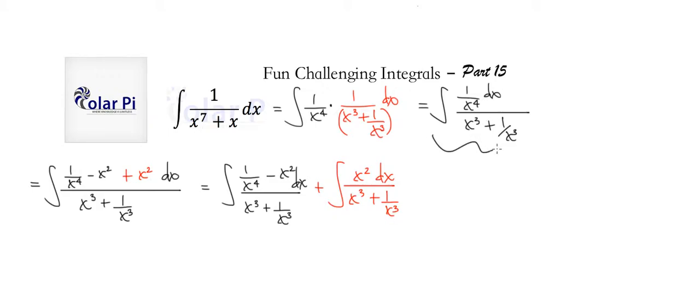But then all I did is I took this and subtracted and added an x squared to the numerator, which I can do because I've added a net nothing, right? And so same as this. This here is the same as this here. Okay, cool.